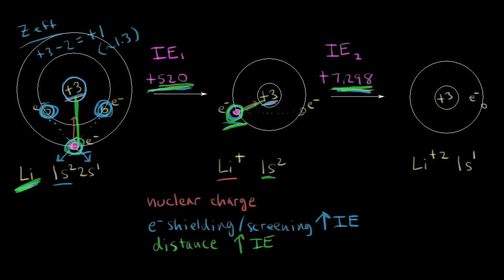It takes a lot more energy to pull away the second electron, and that explains why lithium forms a +1 cation — it doesn't take anywhere near as much energy to remove one electron as it does to remove two to form lithium 2+. This is one way to determine what kind of ion will form: look at the ionization energies. When you see a huge jump, that tells you which ions are easier to form.